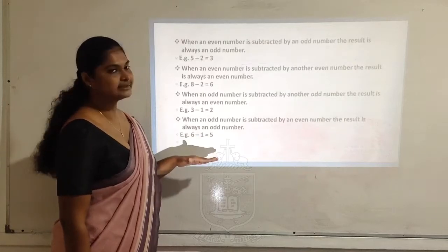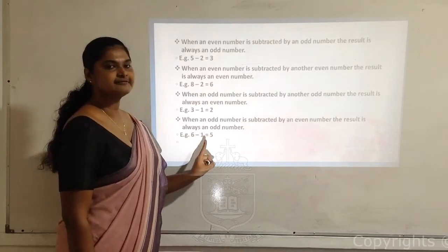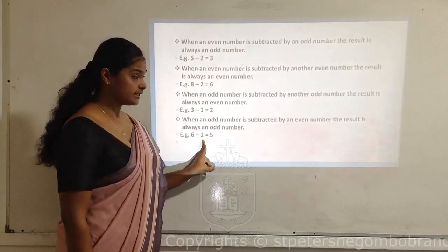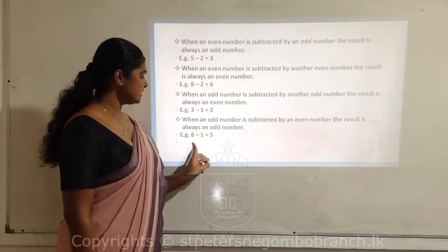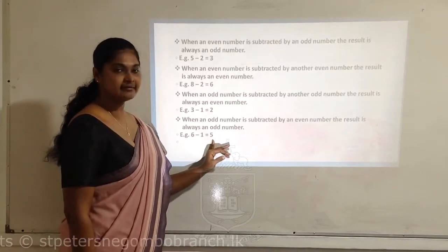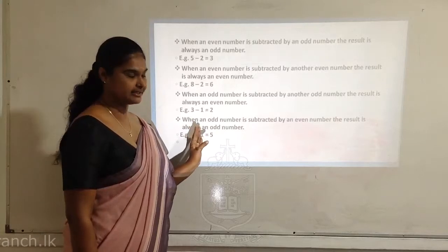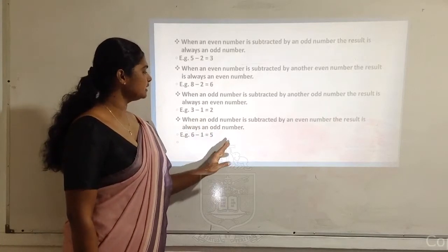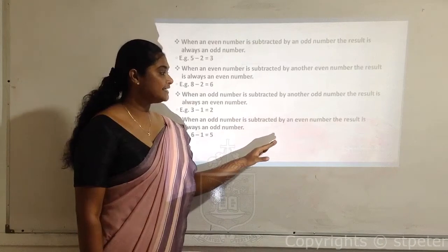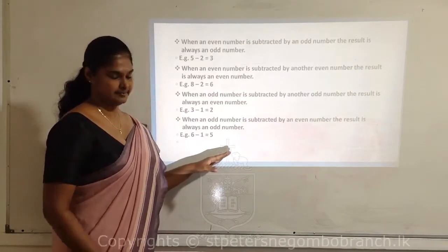Let's go with another example: 6 minus 4. When you subtract an even number by another even number, the result is also an even number. When an odd number is subtracted by an even number, the result is always an odd number.